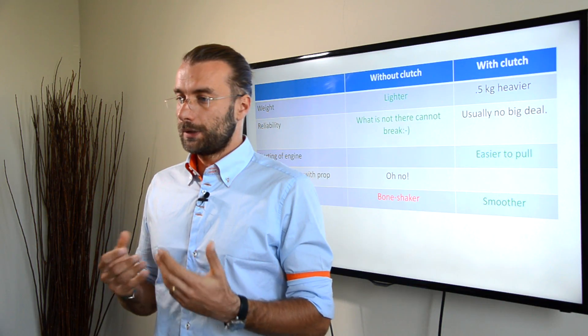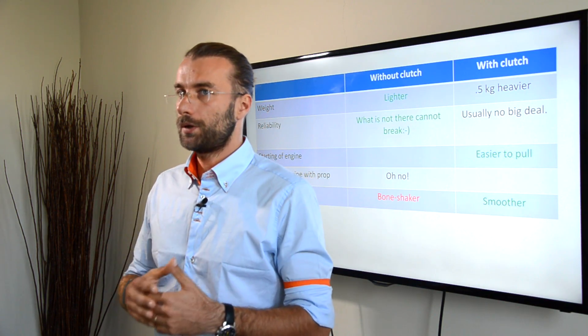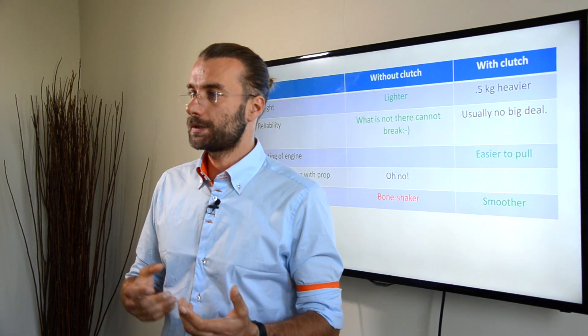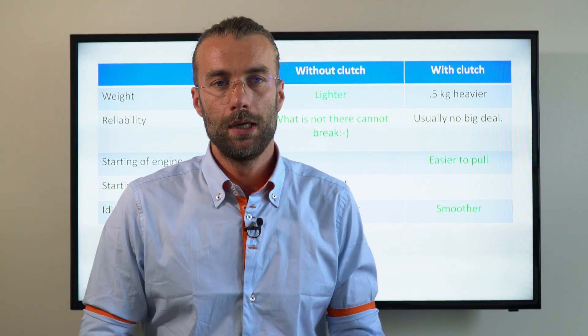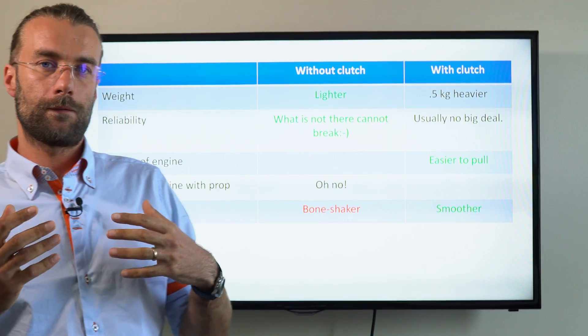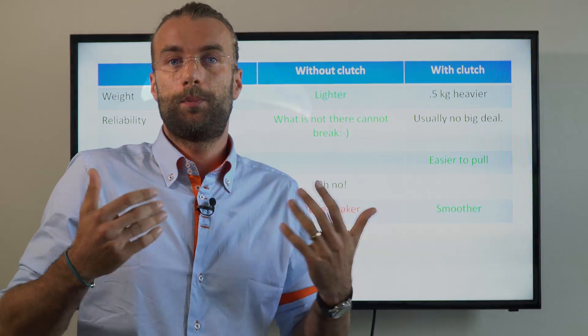And the reason is that with higher idle RPM, the engine runs a little bit smoother, has less vibration, the rubber mounts suffer way less, and there is less stress on the exhaust itself. Now, with engines without clutch, you can't really have this high RPM on idle, because the engine would actually push you.